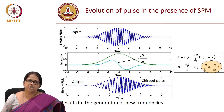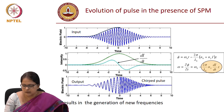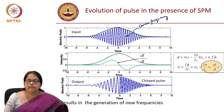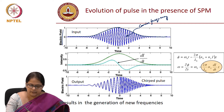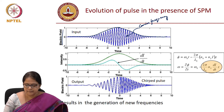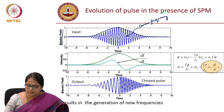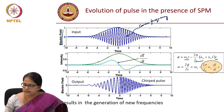In the presence of self-phase modulation, how does the pulse evolve? Consider an input pulse — the blue carrier frequency, with the envelope of the pulse represented in green. The instantaneous phase is φ = ω₀t - β₀z - (2π/λ₀)·N₂·I·z. Taking the derivative with respect to time gives the instantaneous frequency: ω = ∂φ/∂t.